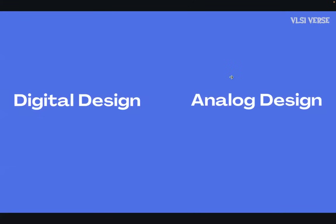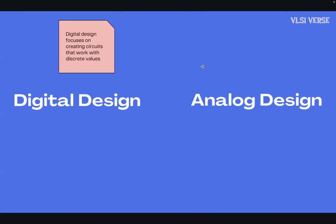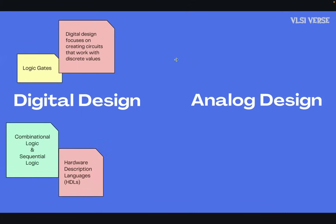First up is digital design. This is one of the core areas of VLSI where we focus on designing digital circuits using logic gates, flip-flops, and other digital components. Digital design focuses on creating circuits that work with discrete values like zeros and ones. It involves logic gates, combinational logic, sequential logic, finite state machines, etc.